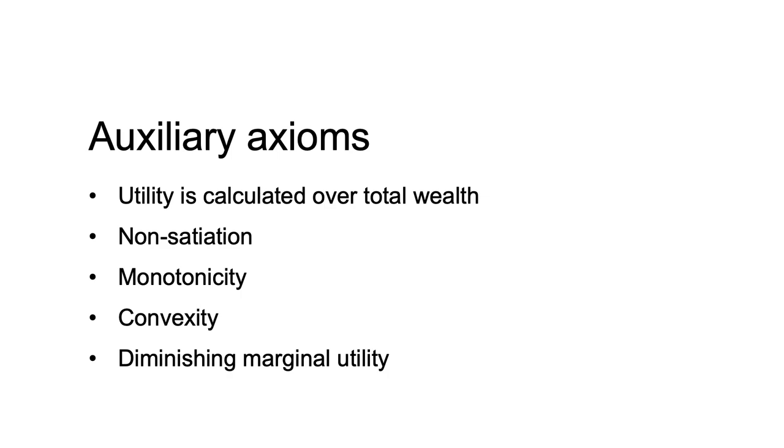These are not required for expected utility theory, but make analysis more practicable. These include reference point of zero wealth, non-satiation, monotonicity, convexity and diminishing marginal utility. I will now provide further detail on these.